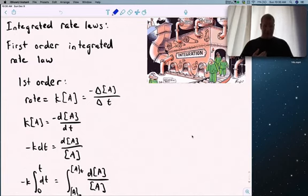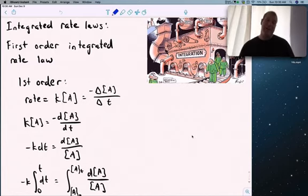First order integrated rate law. First order rate is equal to a rate constant times whatever reactant to the first power, and this equals the rate of disappearance of A. The rate is minus the change in concentration of A over change in time.